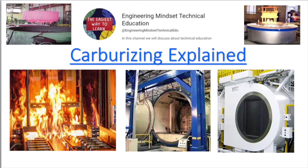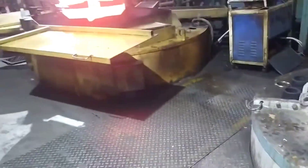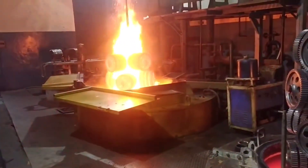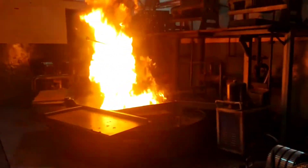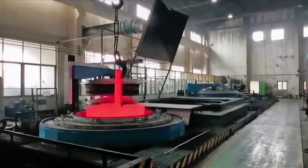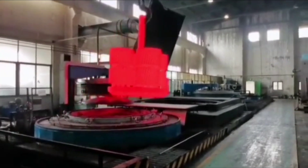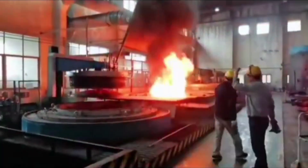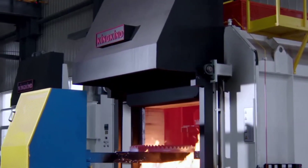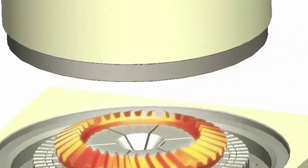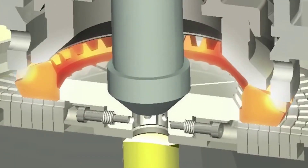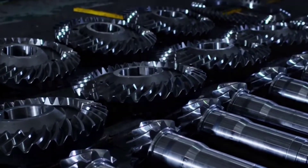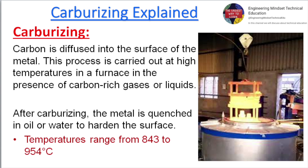Carburizing explained. Carburizing is a process where carbon is diffused into the surface of the metal. This process is carried out at high temperatures in a furnace in the presence of carbon-rich gases or liquids.